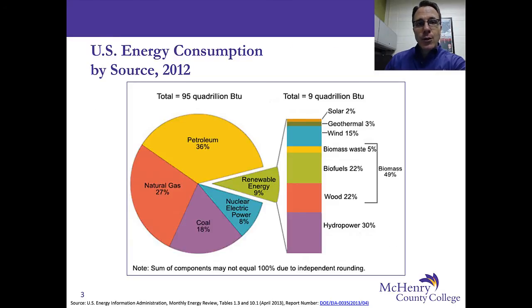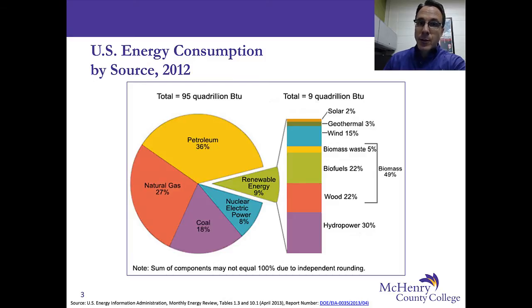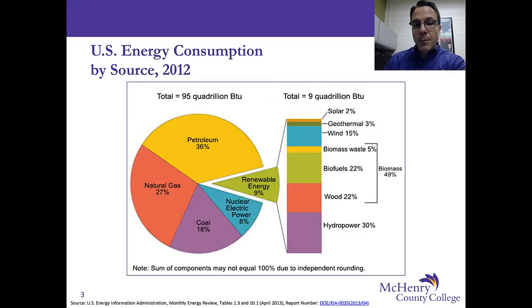This pie chart shows US energy consumption by source in 2012. Notice that in 2012, the United States consumed 95 quadrillion BTU, and 36% of that was from petroleum. 27% was from natural gas, and 18% was from coal. Natural gas and coal largely went into generating electricity, and petroleum largely went into our transportation industry. Nuclear power made up 8% of energy consumption in the United States in 2012. If you combine all four of these non-renewable energy resources, 89% of the United States' energy consumption in 2012 was from non-renewable energy resources.